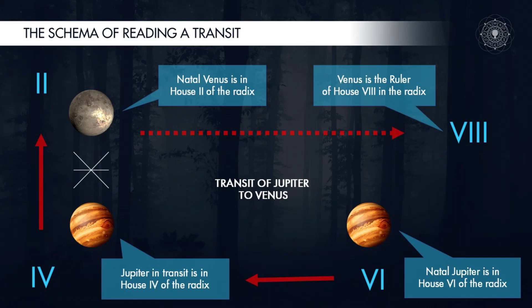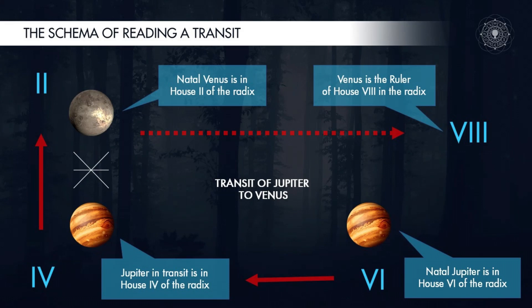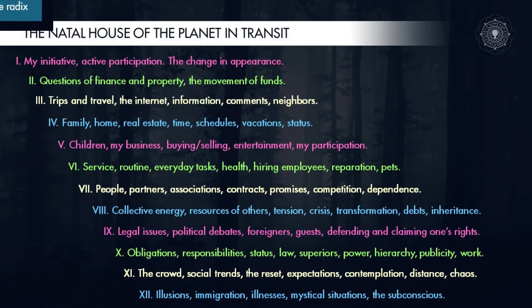Even if it creates problems, Jupiter will not completely spoil the situation. It will offer additional opportunities in the sphere of the house. House five: children, my business, buying, selling, entertainment, participation, holidays, their celebration — also the payment of current bills, though the latter does not correspond to the subject of house two.